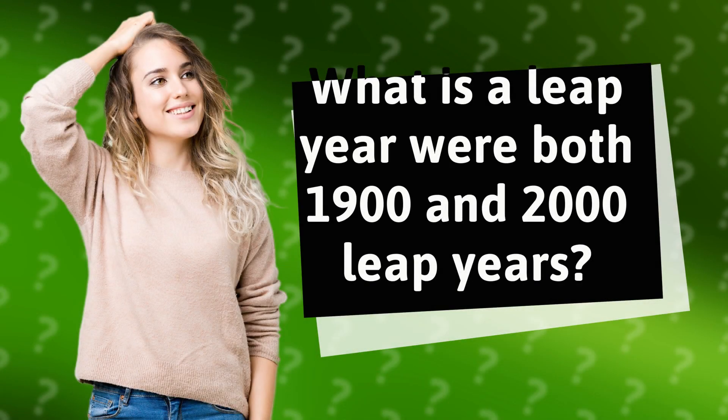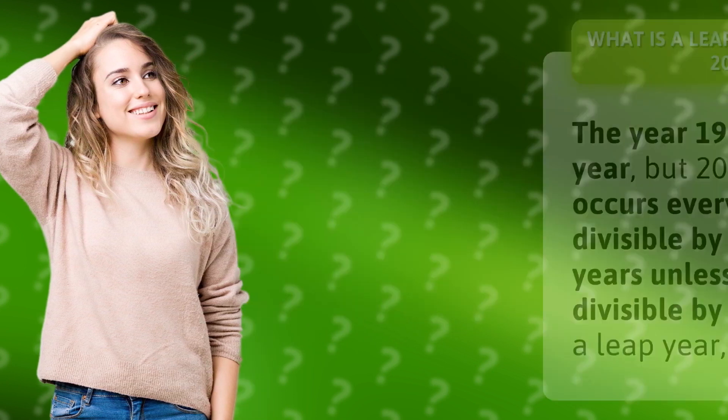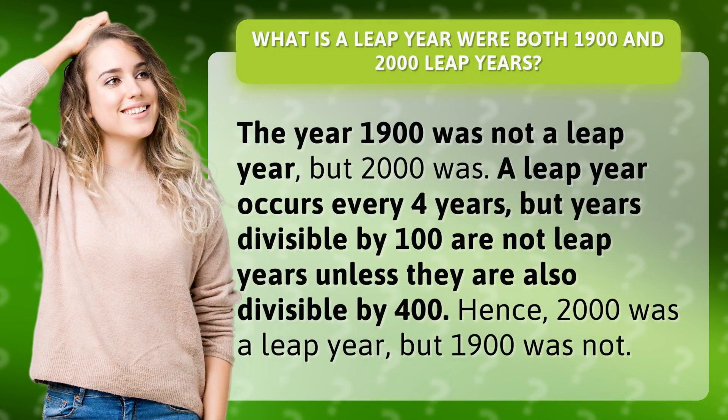What is a leap year? Were both 1900 and 2000 leap years? The year 1900 was not a leap year, but 2000 was. A leap year occurs every four years, but years divisible by 100 are not leap years unless they are also divisible by 400.